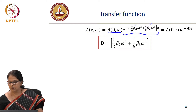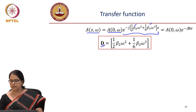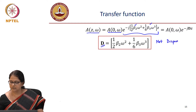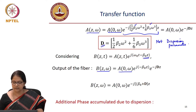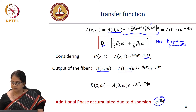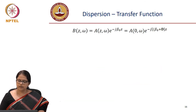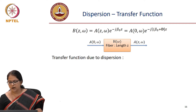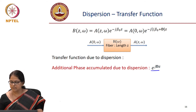We can represent one-half beta 2 omega squared plus one-sixth beta 3 omega cubed as some capital D — remember this is not the dispersion parameter, this is just an operator capital D representing this expression. The additional phase accumulated due to dispersion is e to the power j D z. The propagation phase is e to the power minus j beta naught z, and the additional phase due to dispersion is e to the power j D z. The output spectrum is just shifted in phase with respect to the input.